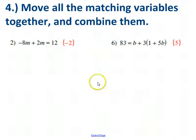Okay, step four. Remember, I've done steps one through three in the previous videos. It talks about moving the matching variables together and combining them. Let's look at this first example on the left. I've got two cases of m. I've got to put those together. Negative eight and two together make negative six.